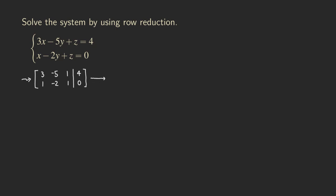One row operation that we can do is to interchange the first and the second row, and then we are going to get 1, negative 2, and then 1 — so I can move the 1 into the 1,1 entry. That's why I'm doing this row operation. Then we are going to get 0 here, and then we have 3, negative 5, 1, and then 4.